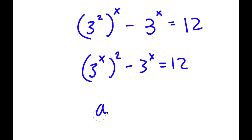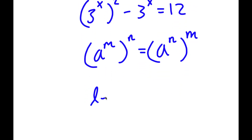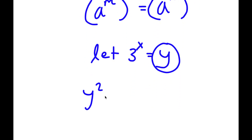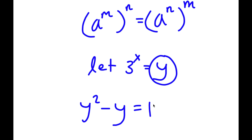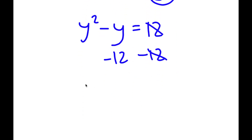Because if I have something in the form a to the power of m to the power of n, this is also equal to a to the power of n to the power of m. So now I'm going to let 3 to the power of x equal y. Substituting y in for 3 to the power of x, I get y squared minus y is equal to 12. I'm going to subtract 12 on both sides, and I get y squared minus y minus 12 is equal to 0.